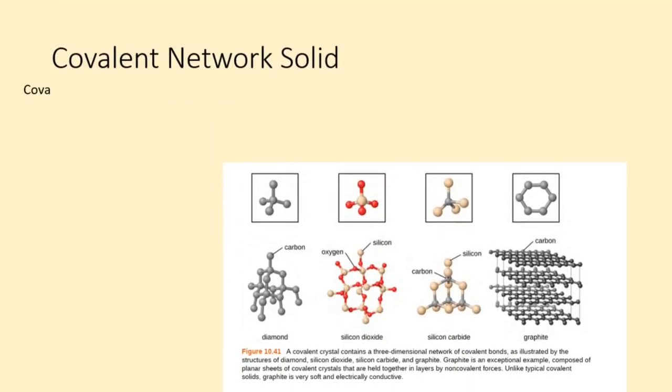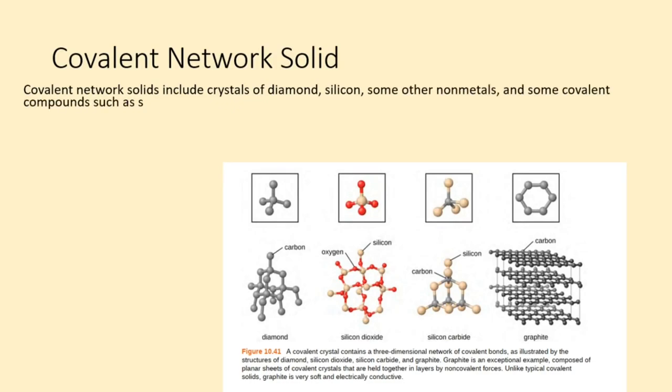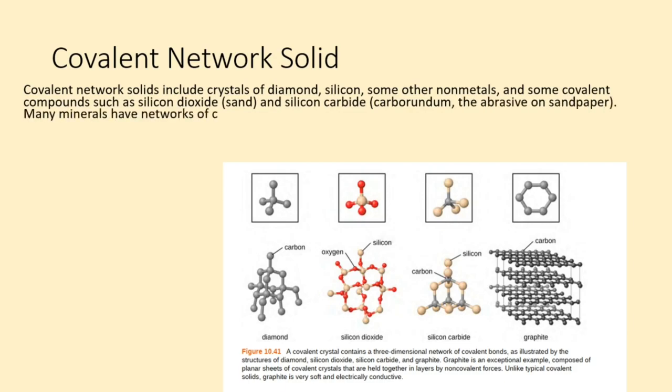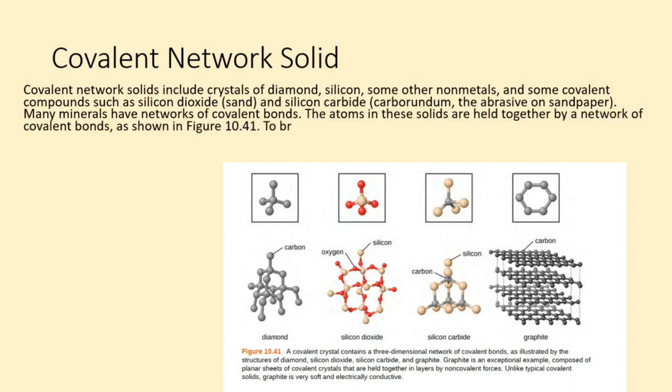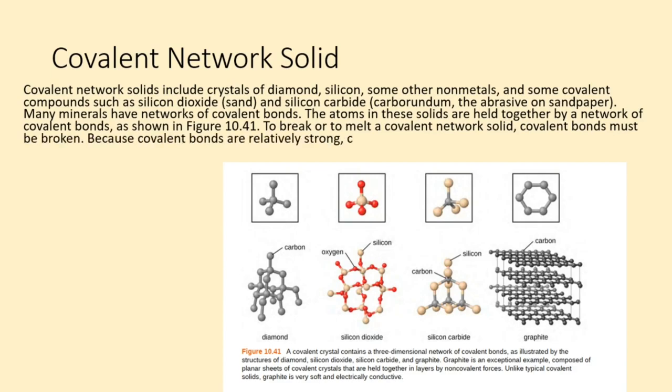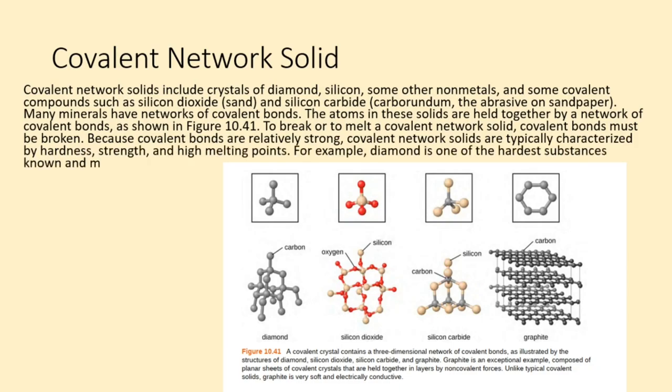Covalent network solids include crystals of diamond, silicon, some other nonmetals, and some covalent compounds, such as silicon dioxide (sand) and silicon carbide (carborundum, the abrasive on sandpaper). Many minerals have networks of covalent bonds. The atoms in these solids are held together by a network of covalent bonds, as shown in figure 10.41. To break or to melt a covalent network solid, covalent bonds must be broken. Because covalent bonds are relatively strong, covalent network solids are typically characterized by hardness, strength, and high melting points. For example, diamond is one of the hardest substances known and melts above 3500°C.